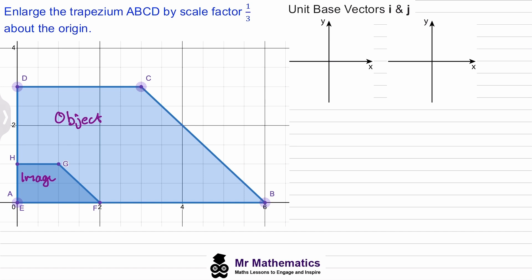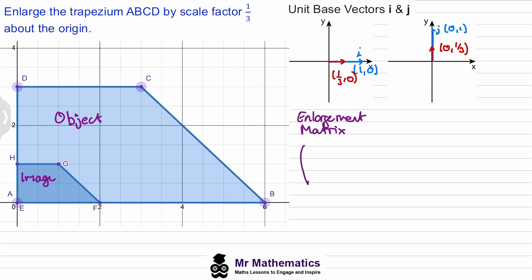You can pause the video and when you come back we'll go through the worked solution. Welcome back. We have our unit vectors i and j, and if we perform the same transformation — an enlargement of scale factor one third about the origin — then our transformed i coordinate becomes (1/3, 0) and our transformed j coordinate becomes (0, 1/3). So our enlargement matrix is [[1/3, 0], [0, 1/3]].